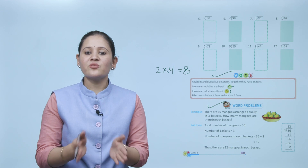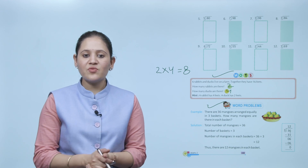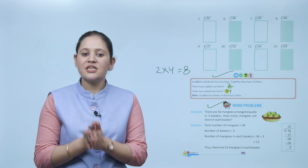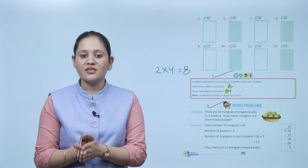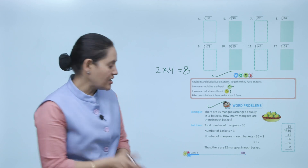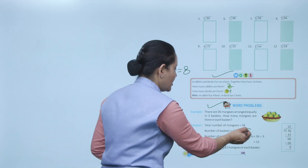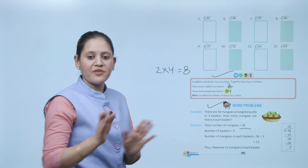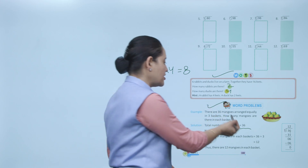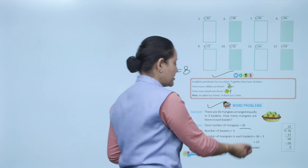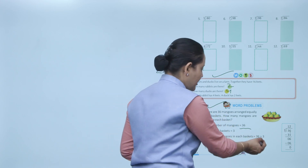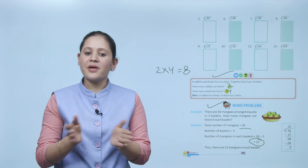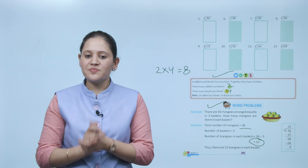Word problems: there are 36 mangoes arranged equally in 3 baskets. Total mangoes = 36, number of baskets = 3. 36 ÷ 3 = 12, so there are 12 mangoes in each basket.